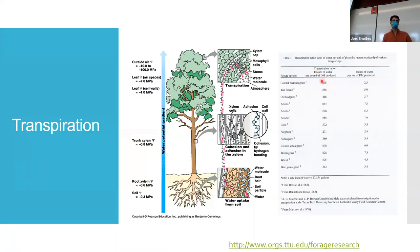Transpiration ratios describe the pounds of water per pound of dry organic matter produced. Alfalfa takes 400 pounds of water to create one pound of dry alfalfa — it's one of the biggest evapotranspirers. Corn is a little less than half of that. Sorghum is even less. Wheat is kind of middle ground. Alfalfa is the biggest consumer of water.